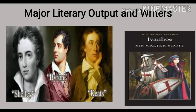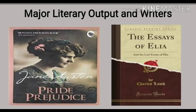Another important writers were Byron, Shelley and Keats, who also put forward a rich literary output to European literature. Sir Walter Scott was a novelist of the Romantic age, famous for his historical novels. Jane Austen was regarded as Britain's greatest women novelist — her notable novels are Sense and Sensibility, Pride and Prejudice and Emma. Charles Lamb was a famous prose writer and essayist during the Romantic age; he wrote under the pen name Elia.